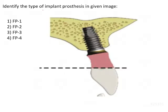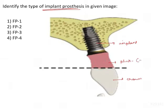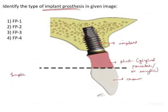Identify the type of implant prosthesis in the given image. This is the implant, this is the crown, and there is a pink part which could be gingival porcelain or acrylic. Now, the classification of implant restorations can be FP or RP.